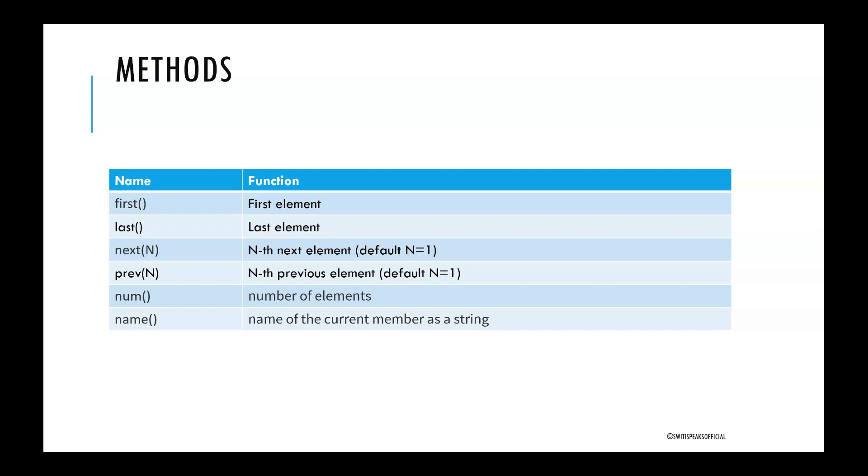Similarly, in previous, the default value of n is 1. If you don't specify, the default value is 1, and it will give the previous element. And if you specify again, say for example 2, then it will give previous to previous element, because n is 2.